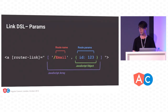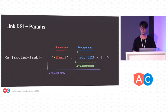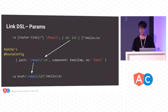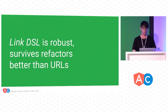Let's show this diagram with parameters. We have the route name and we have a JavaScript array. Inside the array we have a second item — a JavaScript object that represents the route parameters. So in this case we give it an ID of 123. We look up on the AppComponent's route configuration the route named Email, and we interpolate 123 into the spot in the path. This link DSL is much more robust and survives refactors better than URLs — you would only have to change your route configuration if you needed to rename 'email' to something like 'messages'.